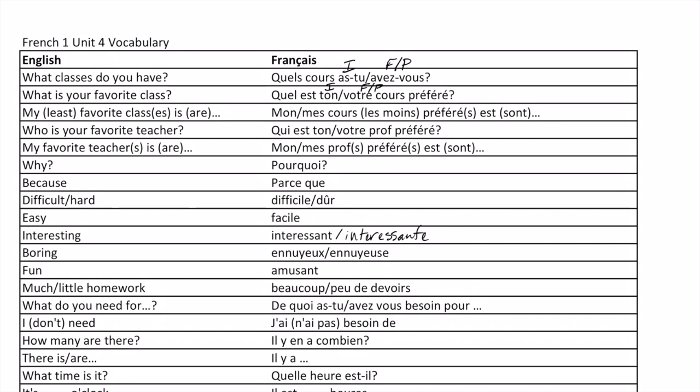'Mon cours préféré est' — that would be our singular — or 'Mes cours préférés sont' — that is our plural. And if you're going to go with your least favorite: 'Mon ou mes cours les moins' or 'le moins préféré est' or 'sont.'